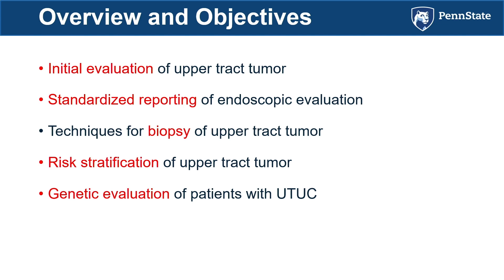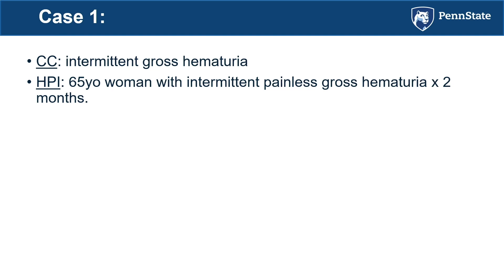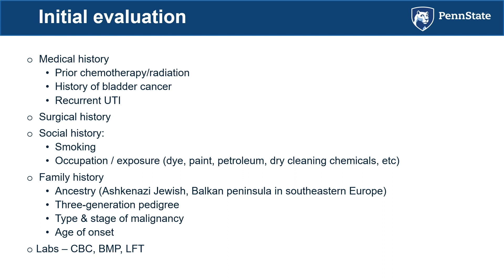The first case is a 65-year-old woman who presented with intermittent painless gross hematuria for two months. Initial evaluation involves a complete history and physical. A complete history includes: prior history of cancer, prior chemotherapy and radiation — such as cyclophosphamide, which predisposes to urothelial cancer — history of bladder cancer, recurrent UTI, surgical history, social history such as smoking, occupational exposure to petroleum or dry cleaning materials, and family history.